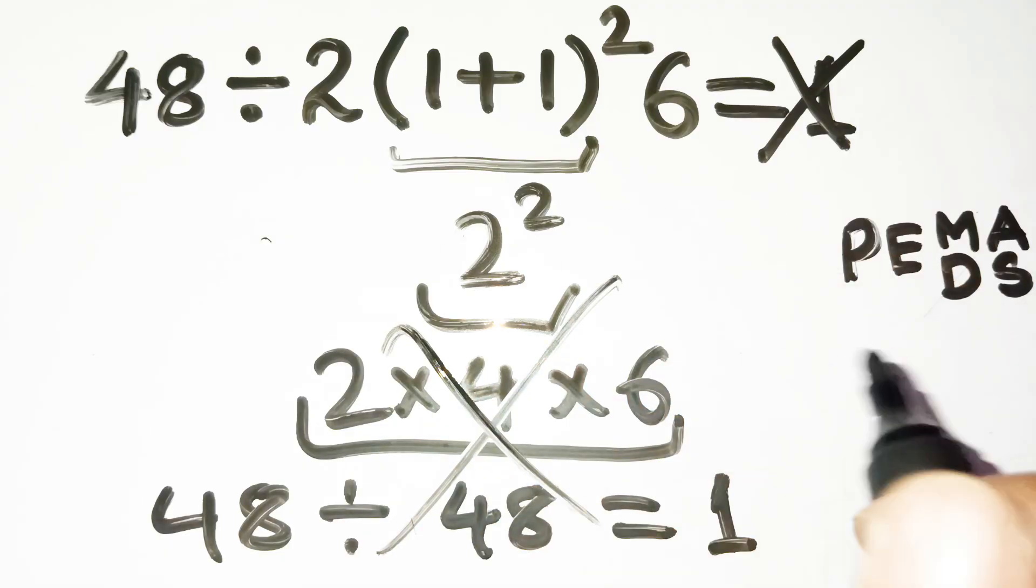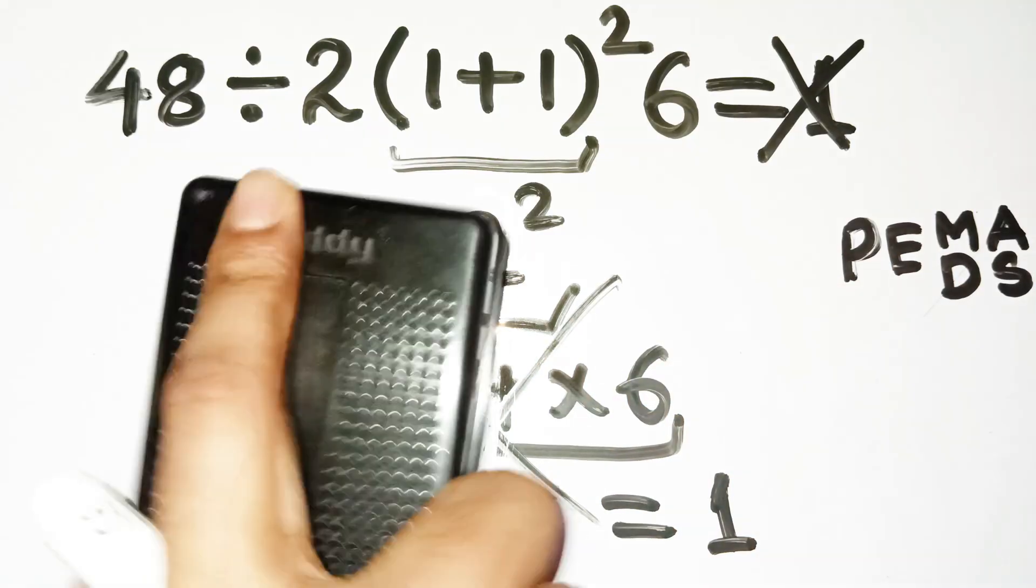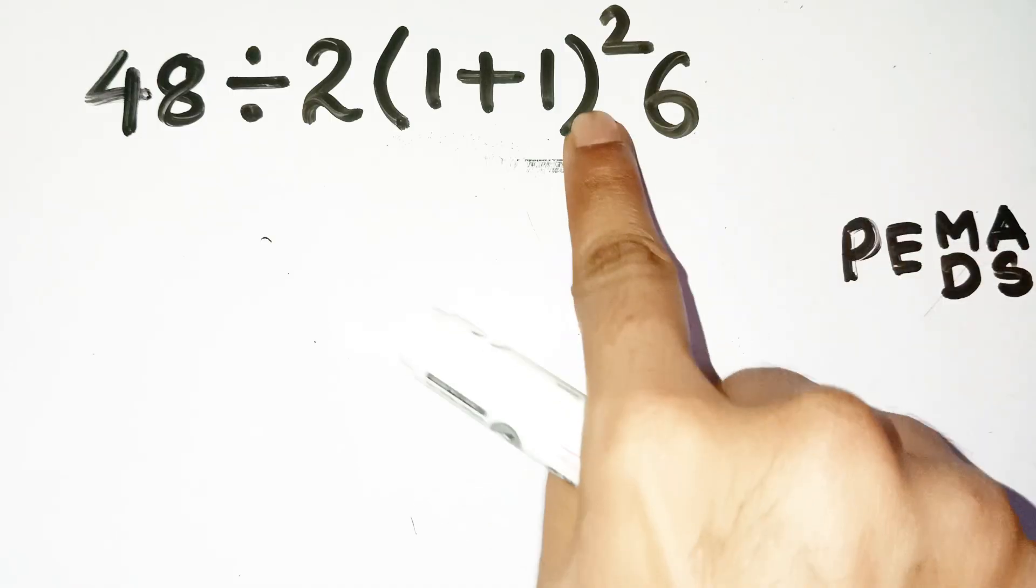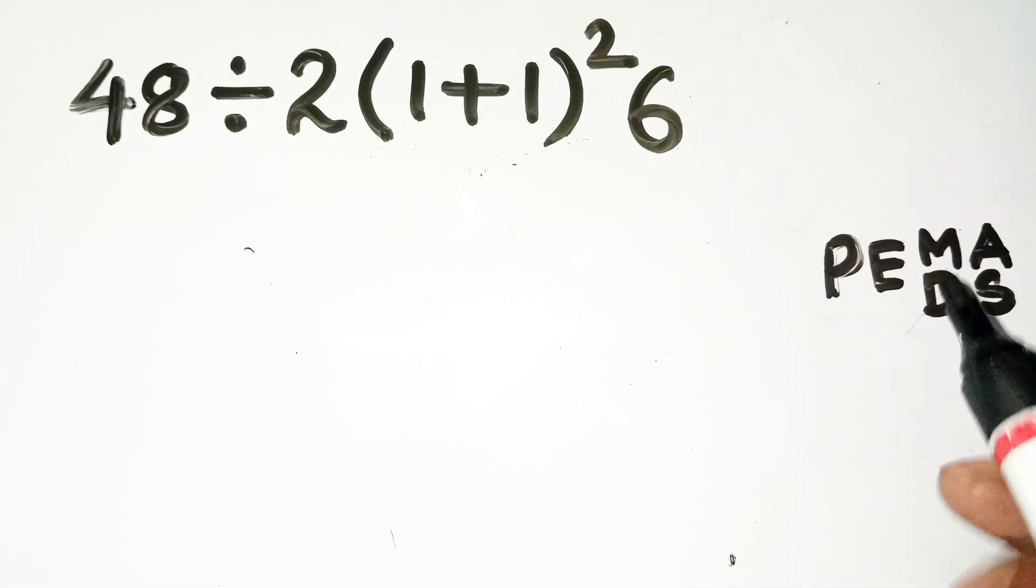Now here's where the math quietly flips the table on you. The moment you finished simplifying that bracket, you forgot one tiny rule, and it changes everything.